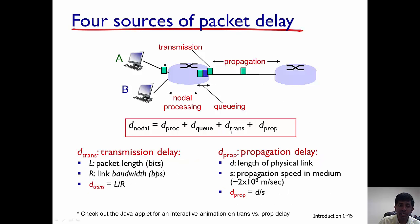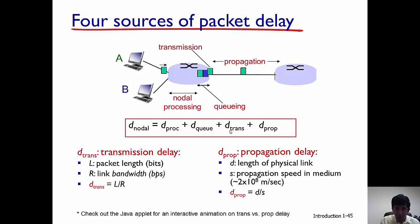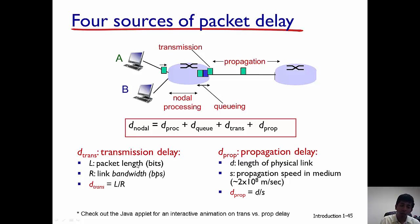The next component of delay is the transmission delay. Once the packet gets to the head of the queue — that is, it is the packet which is going to be transmitted — it's going to be put onto the wire. There is a finite amount of time the router takes to put the packet onto the wire, and that time is called the transmission delay. If the packet is L bits and the output capacity of the link is R bits per second, then the transmission delay is L over R.